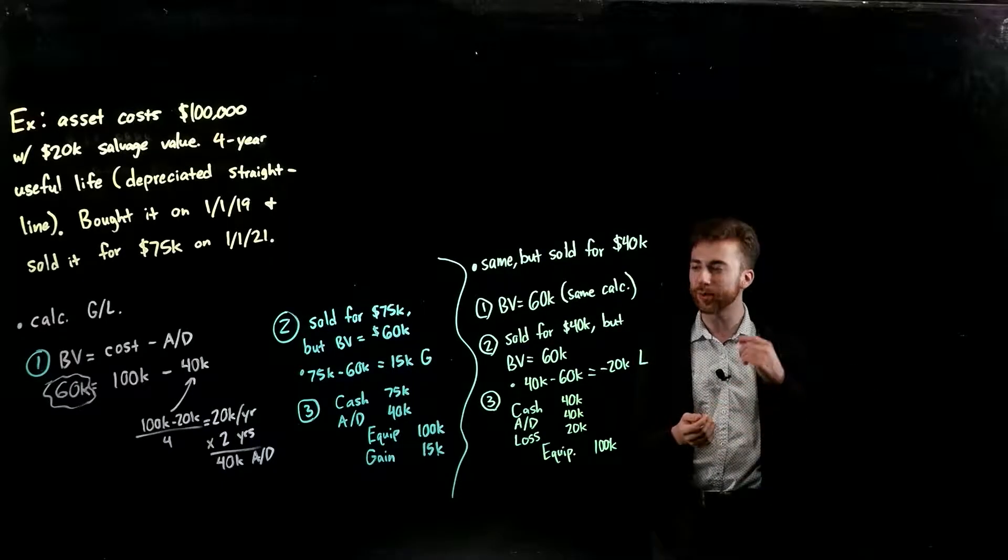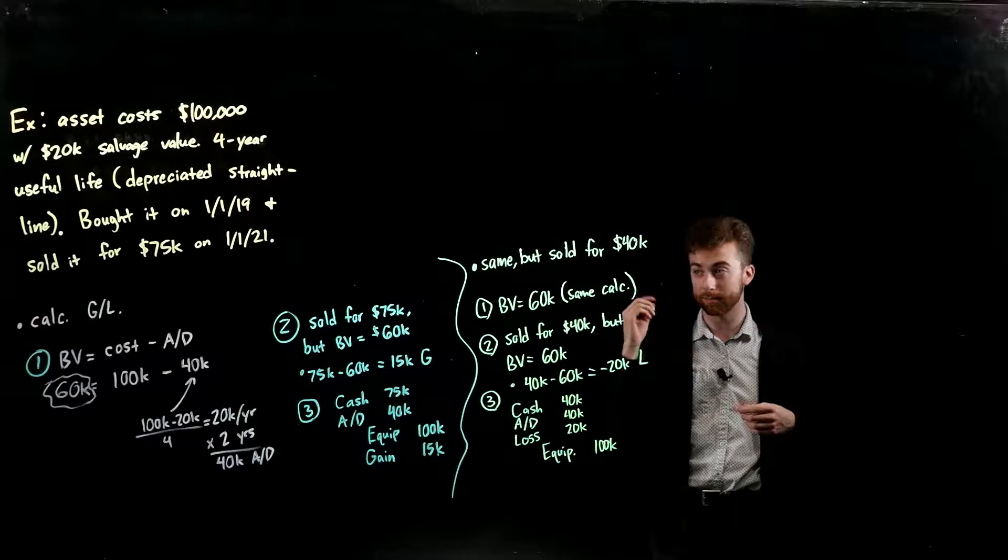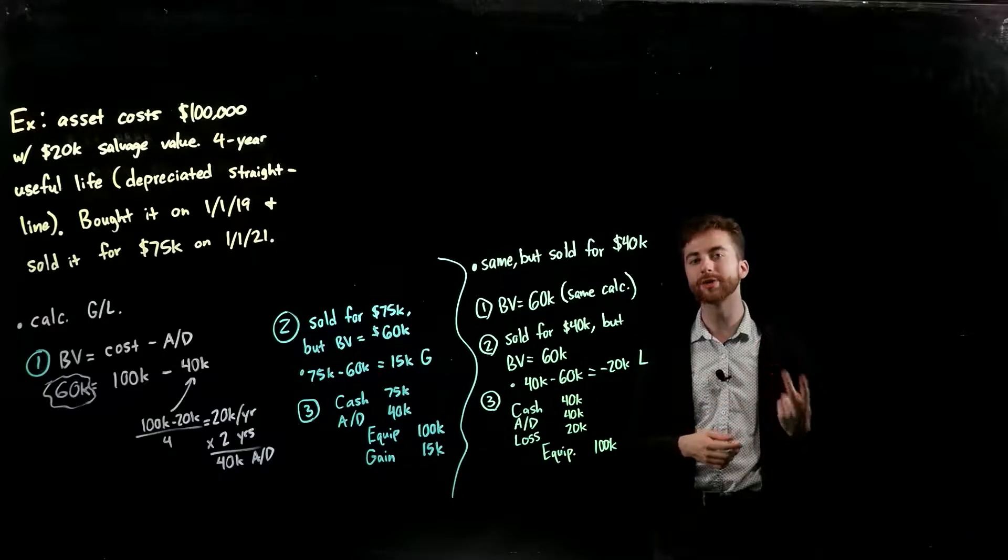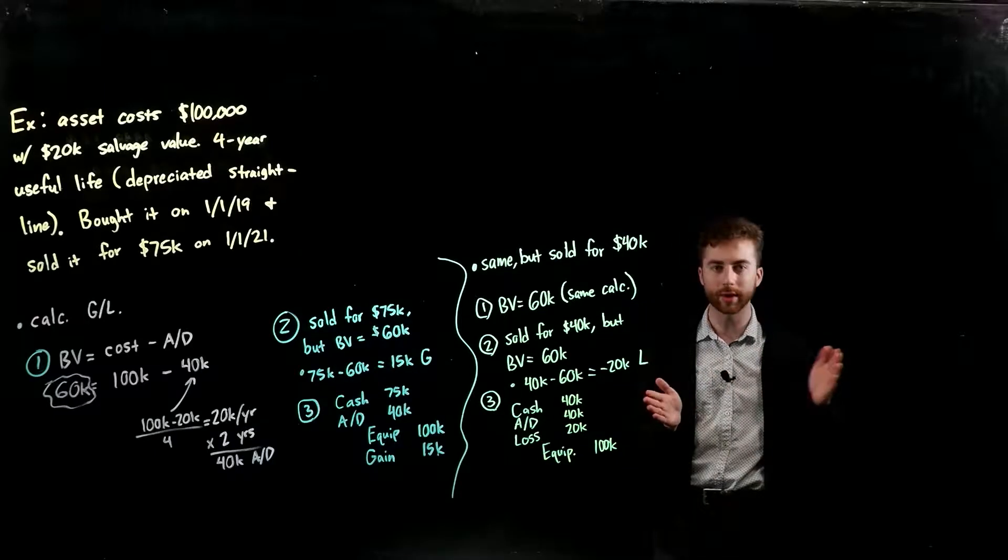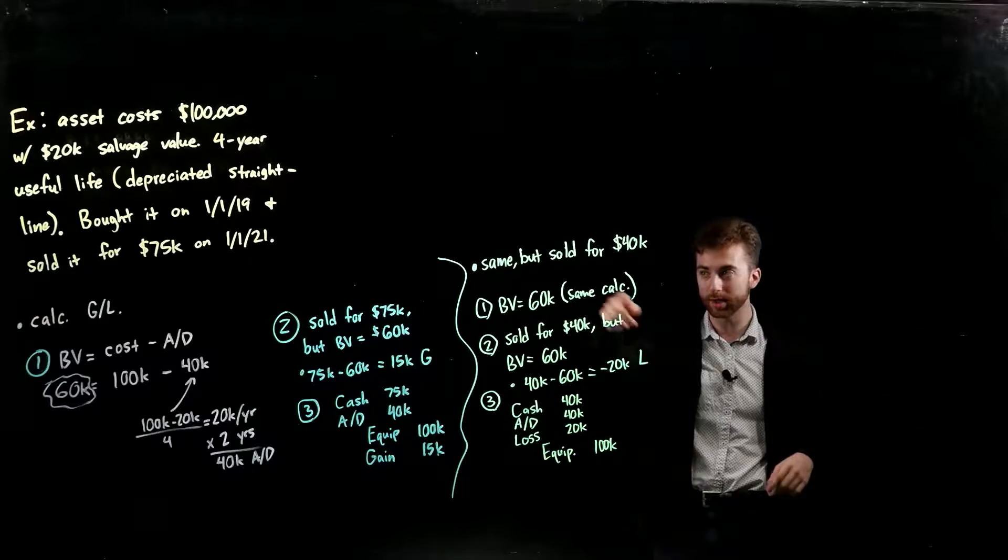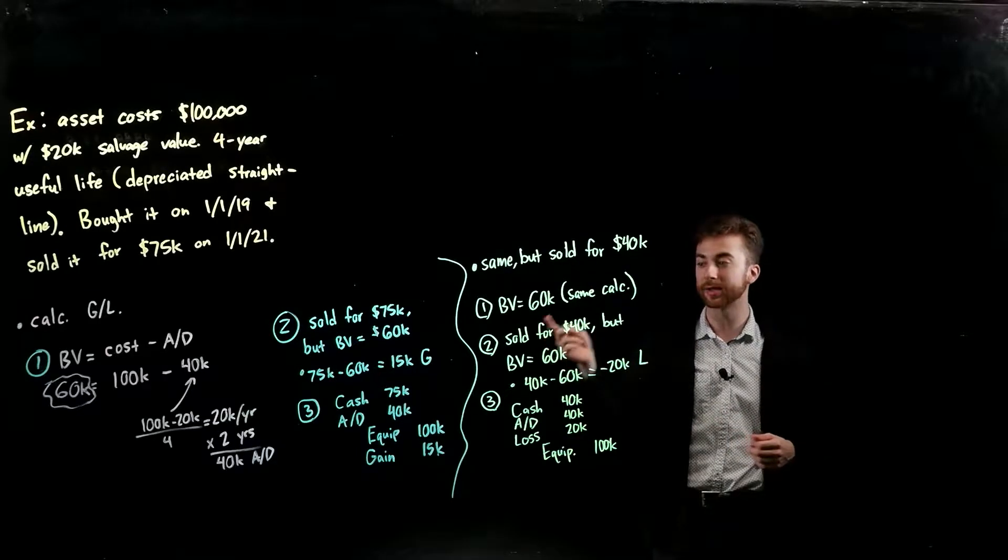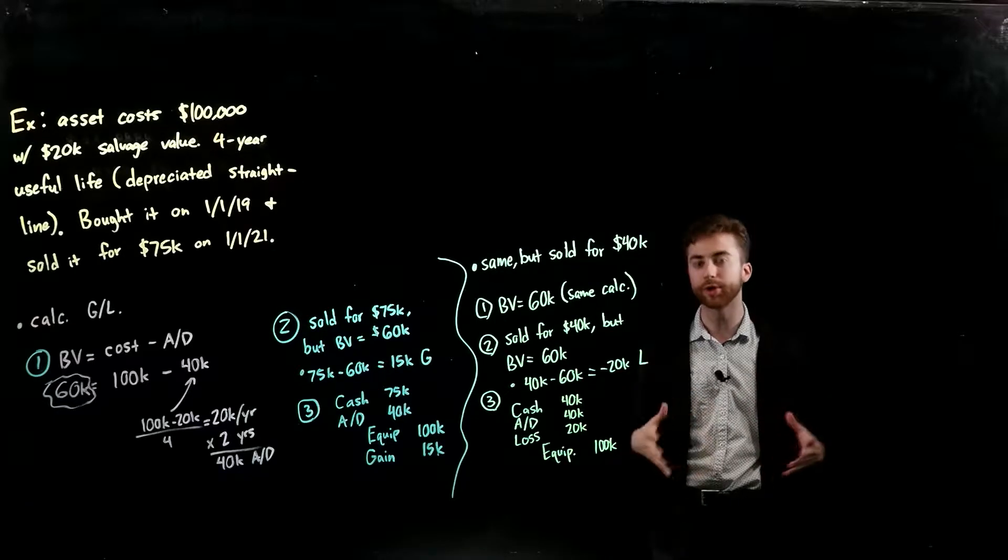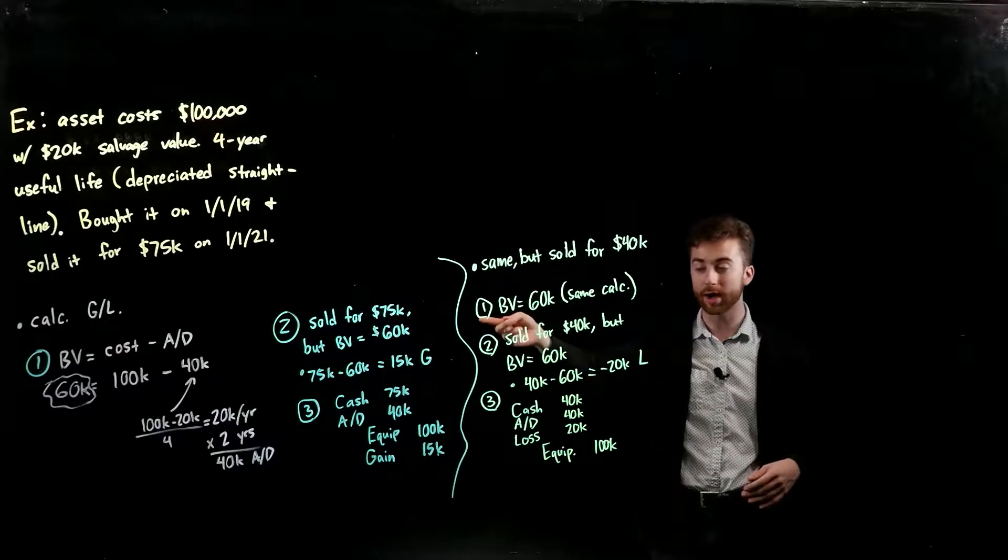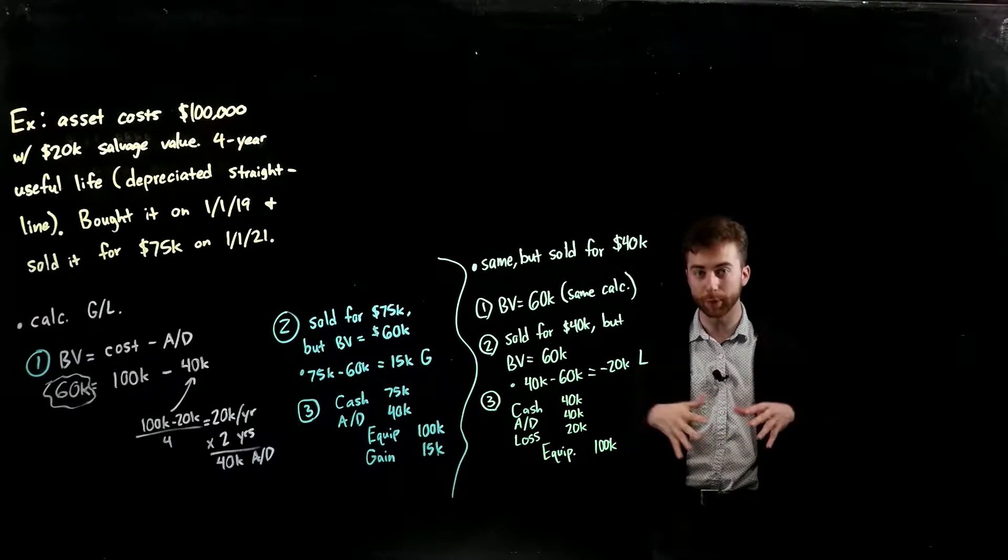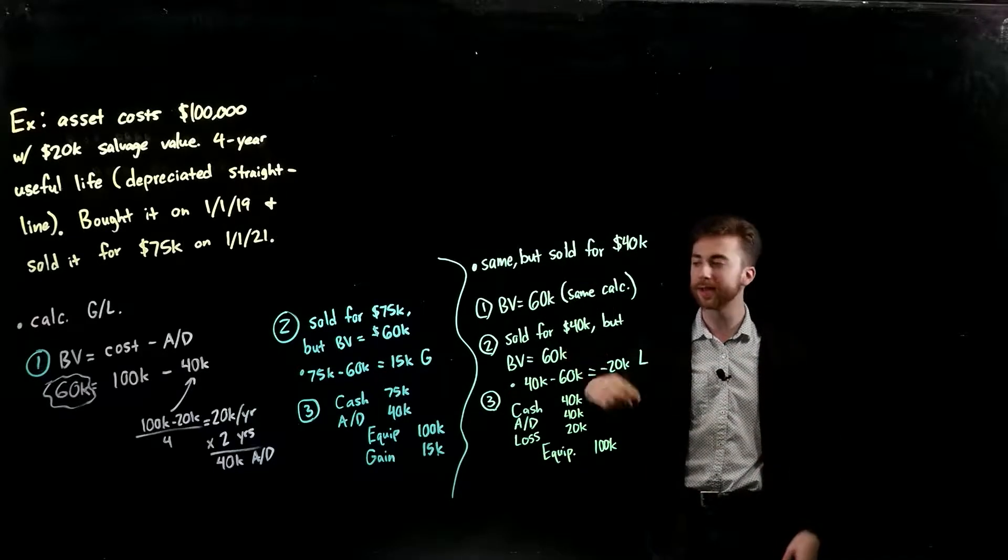You can see that's what we do per year. If I'm going from 1-1-2019 to 1-1-2021, that's two years worth of depreciation that I took - all of 2019, all of 2020 puts me right at the beginning of 2021. So $20,000 a year times two years is $40,000 of accumulated depreciation. Thus my cost of $100,000 minus the overall depreciation that's accumulated up to that point of $40,000 leaves me with $60,000 of book value.